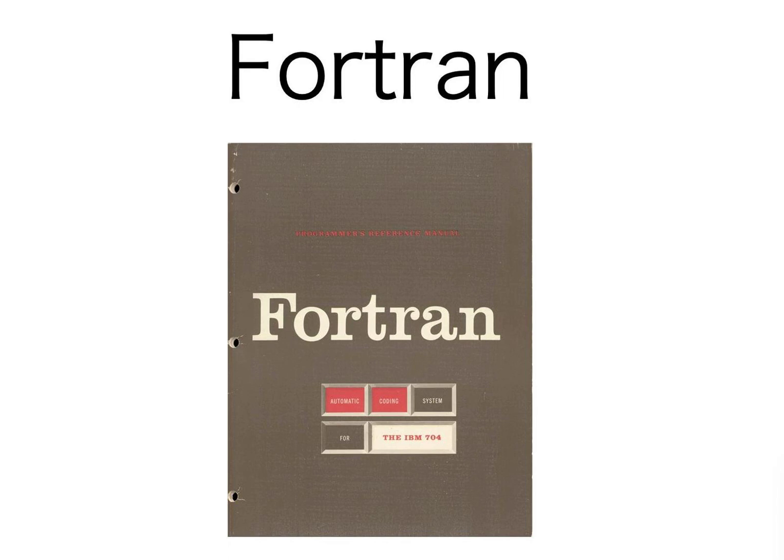By 1960, versions of FORTRAN were available for the IBM 709, 650, 1620, and 7090 computers. Significantly, the increasing popularity of FORTRAN spurred competing computer manufacturers to provide FORTRAN compilers for their machines, so that by 1963 over 40 FORTRAN compilers existed. For these reasons, FORTRAN is considered to be the first widely used cross-platform programming language.